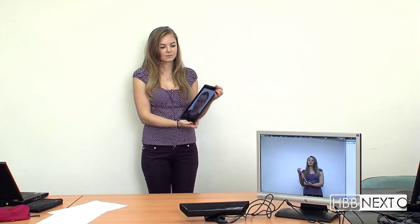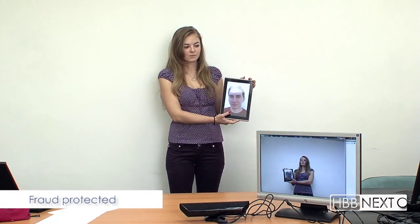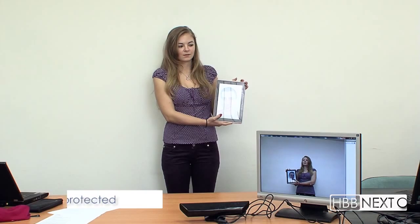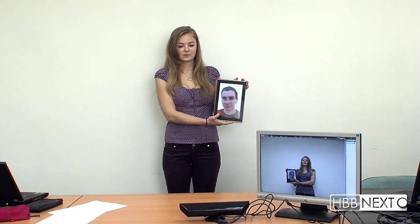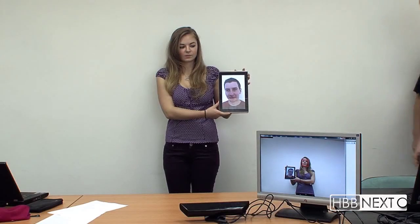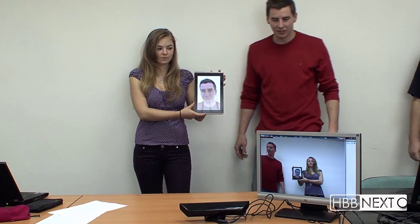An advantage is our system is robust against attacks with two-dimensional images, so it's quite necessary to have a real person in front of the camera. Now you can see that Matej enters the scene and it recognizes him as well.